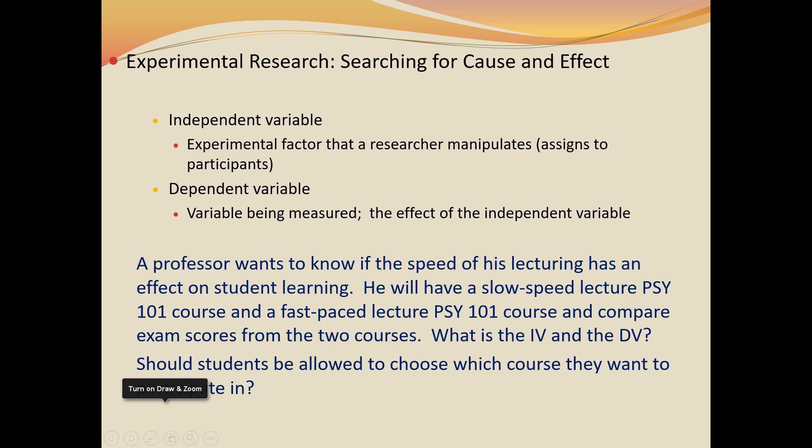So as an example, a professor wants to know if the speed of his lecturing has an effect on student learning. So he decides he's got two Psych 101 courses. He's going to do a slow speed lecture in one of the courses, and he's going to do a fast paced lecture in the other course. And then he's going to compare the average exam scores from the two classes to see which class performed better.